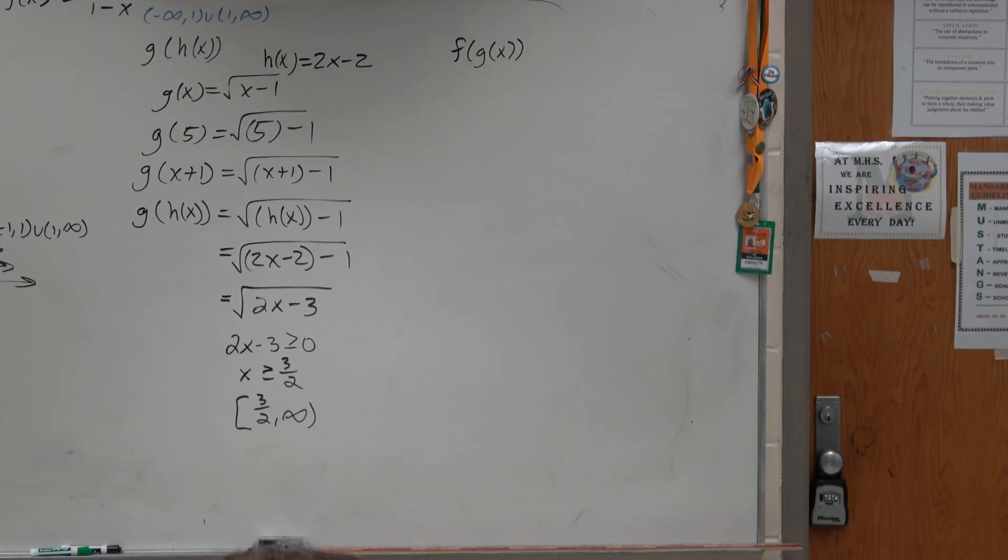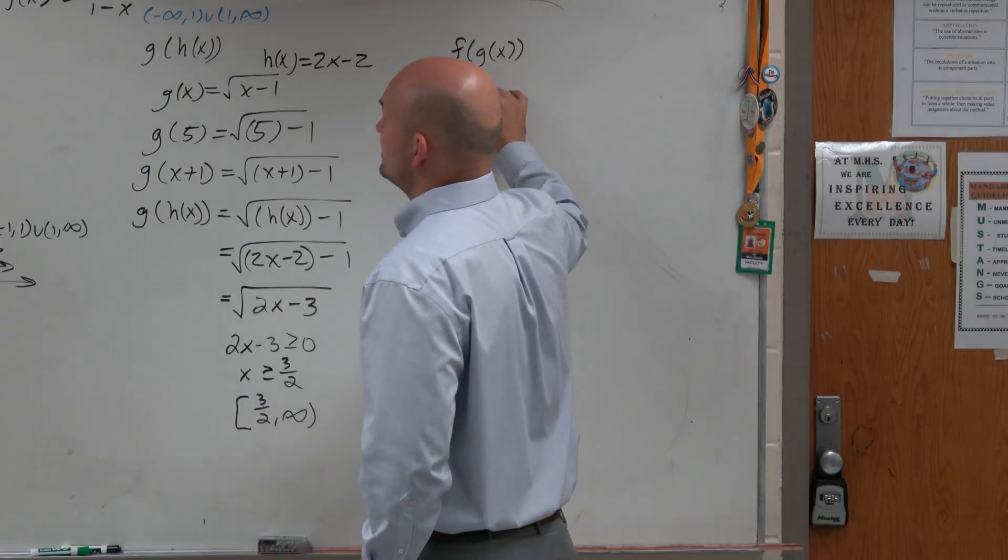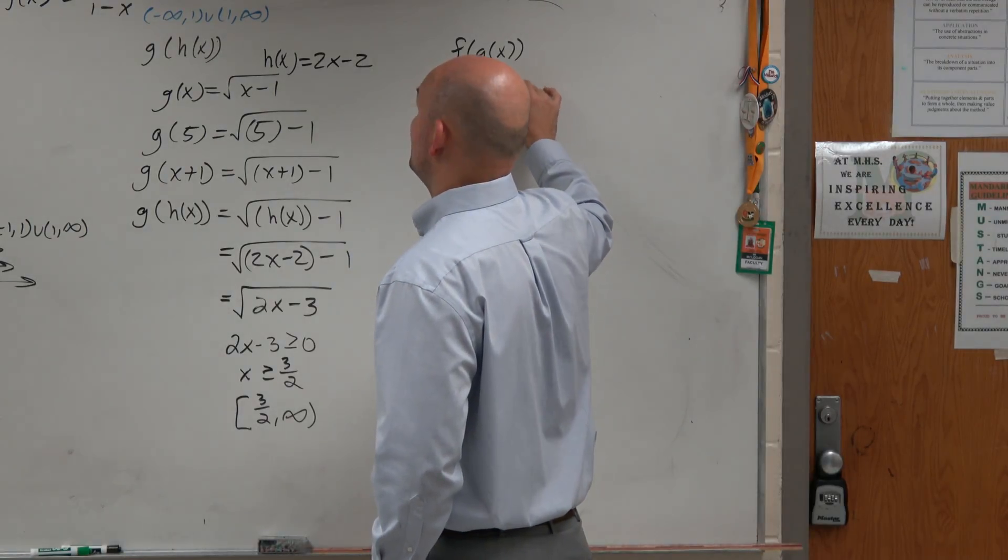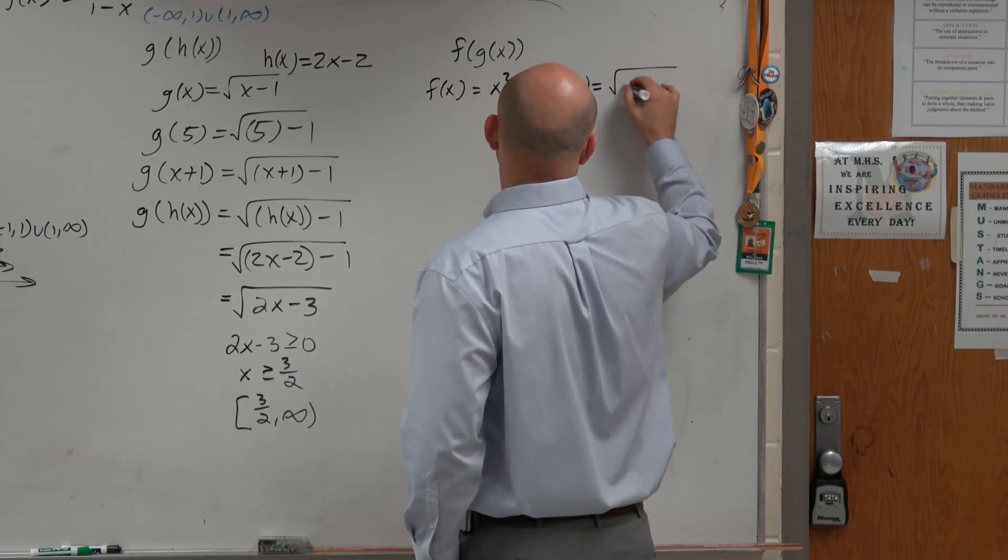What we're simply doing is we're plugging in g of x into f of x. So f of x is equal to x squared minus 1, and g of x is equal to square root of x minus 1.